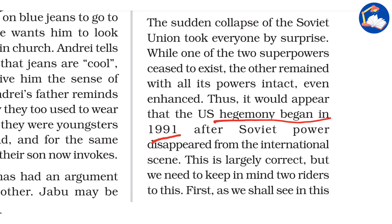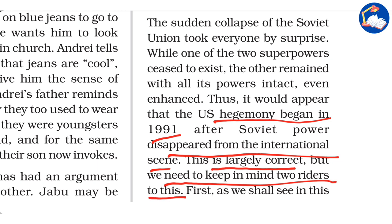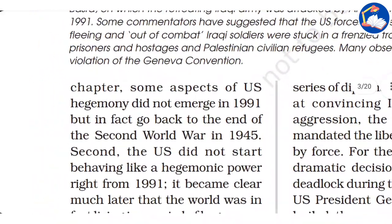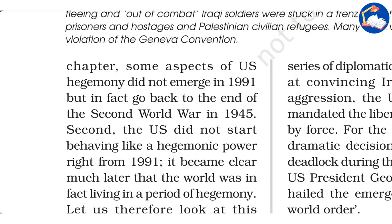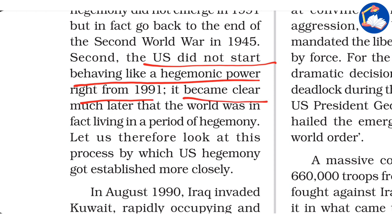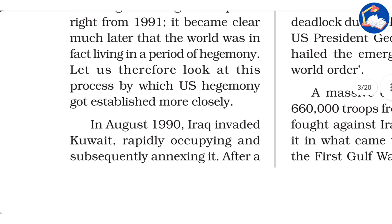US hegemony thus appears to have begun in 1991 after Soviet power disappeared from the international scene, though we need to keep two points in mind. First, some aspects of US hegemony go back to the end of the Second World War in 1945. Second, the US did not start behaving like a hegemonic power right from 1991 — it became clear much later that the world was living in a period of hegemony.